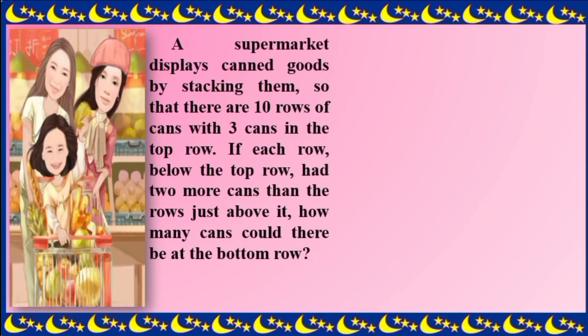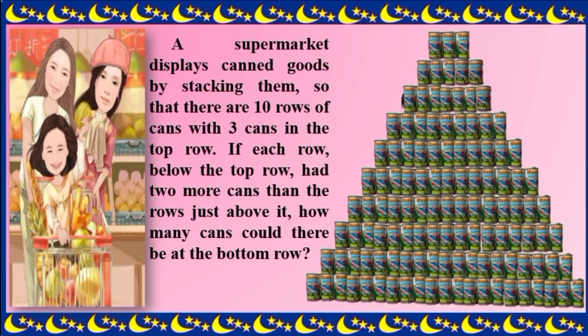A supermarket displays canned goods by stacking them so that there are 10 rows of cans with 3 cans in the top row. If each row below the top row had two more cans than the row just above it, how many cans could there be at the bottom row?